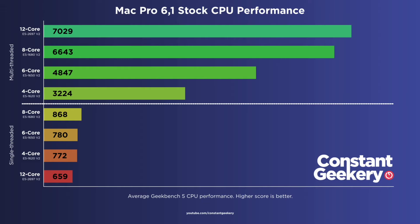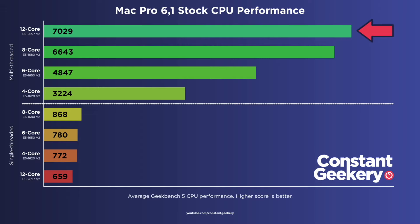The 6-core is 50% faster than the quad-core on multi-threaded performance — a really significant upgrade. The 8-core is 37% better than the 6-core on multi-threaded, which is a big upgrade for only adding two additional cores. But going up to the 12-core, adding four more cores, it's only 6% better than the 8-core for multi-threaded. And the 8-core is considerably faster than the 12-core for single-threaded tasks. The main reason for these differences is the turbo performance of each CPU.